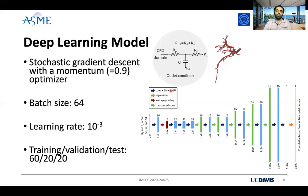We used a stochastic gradient descent with a momentum optimizer to train the neural network, a batch size of 64, and an initial learning rate of 0.001. The dataset was divided into three subsets: 60% training, 20% validation, and 20% test.